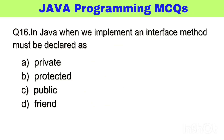Question number 16. In Java, when we implement an interface method, it must be declared as dash. The right answer, option C: public.